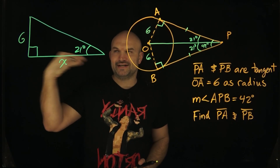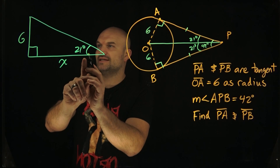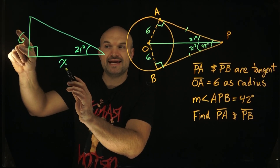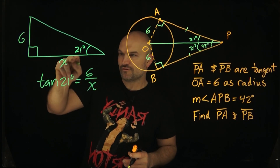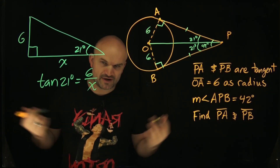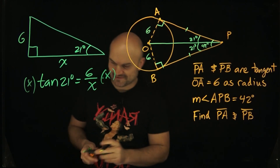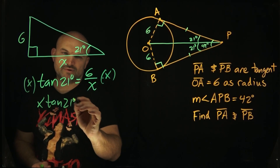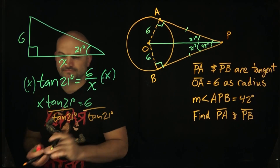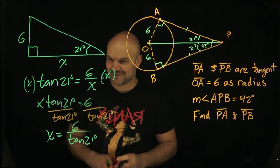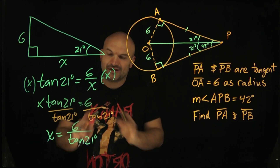I'm looking for this missing length. I don't have enough information for the Pythagorean theorem, but I do have enough for sine, cosine, tangent. Looking at this 21-degree angle, I'm dealing with the opposite side and the adjacent side, so that goes into tangent. Tangent equals opposite over adjacent, so that's tangent of 21 degrees equals 6 over X. To solve for X, I multiply both sides by X, giving X times tangent of 21 degrees equals 6. Then I divide by tangent of 21 degrees to get X equals 6 divided by tangent of 21 degrees. Make sure your calculator is in degree mode to get the decimal equivalent.